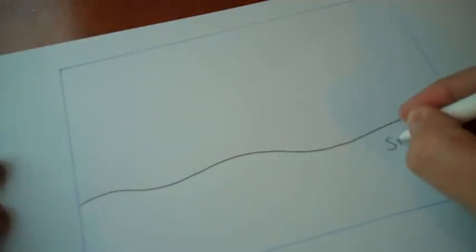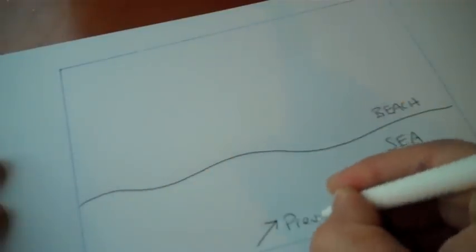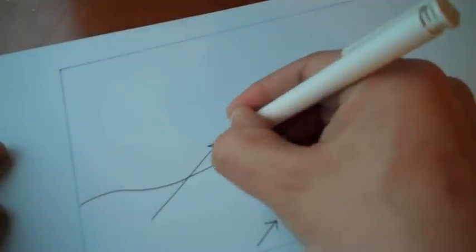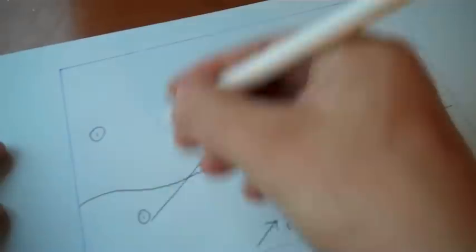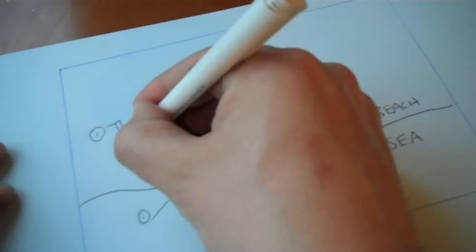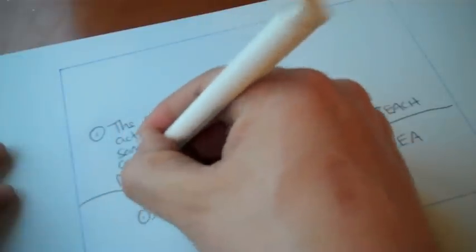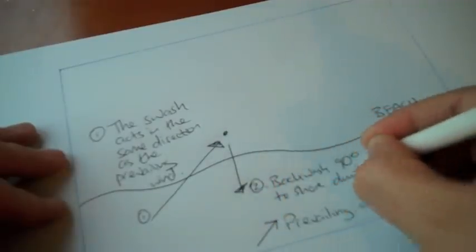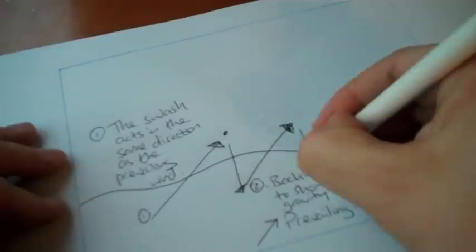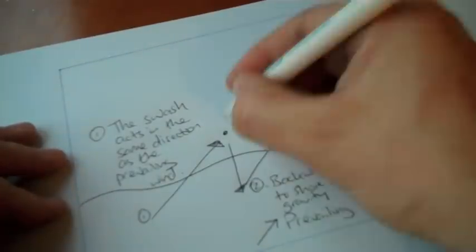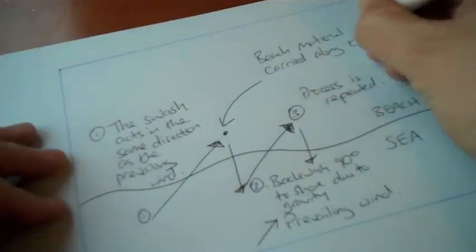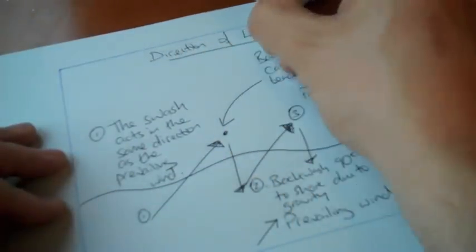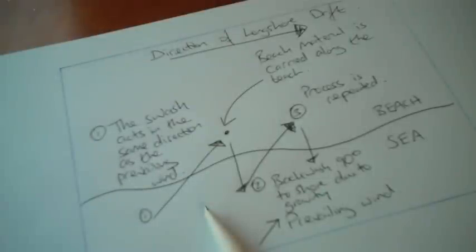So let's put all that into a diagram. We need to clearly identify our beach and sea, and it's always easier to do this as a plan diagram. Make sure to get in the prevailing wind direction and put in a swash arrow. Of course, you need to show the process. If you use numbers, that's going to really help you out. One—talk about the swash. Two—talk about the backwash. Three—talk about the process repeating itself. And don't forget to add in somewhere that the material is going to move along the beach. Finally, don't forget the direction of longshore drift. And there we have it—our completed diagram. We're going to score maximum marks and we're going to move on confidently to the rest of the question.